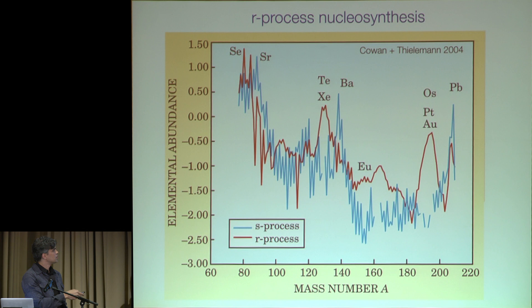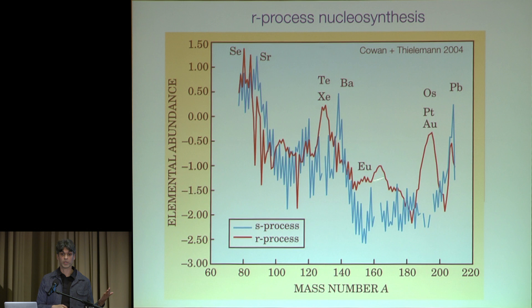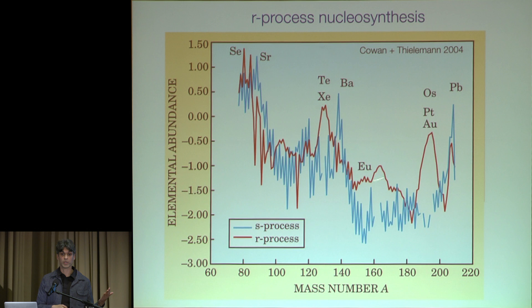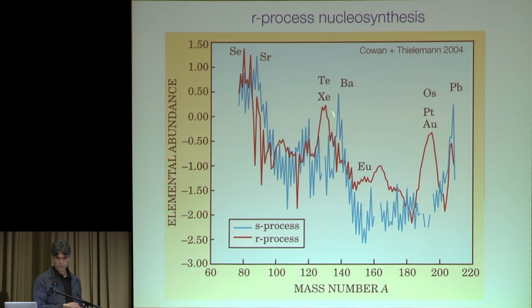One element is not exclusively made by one or the other, but my favorite peak — which has gold and platinum — is almost exclusively made by the R process. Europium, which has a very strong oscillation strength producing deep spectral features in stars, is basically used as a tracer of the R process. While barium, for example, is used as a tracer of the S process.